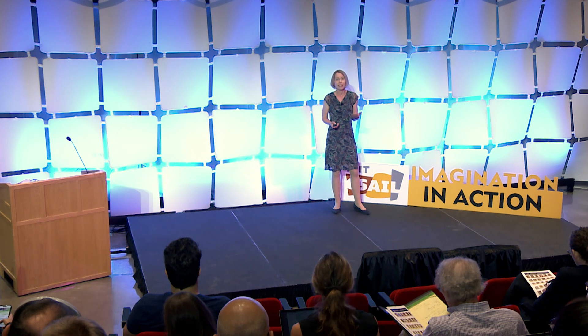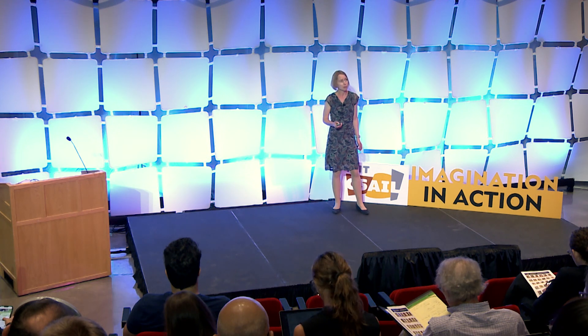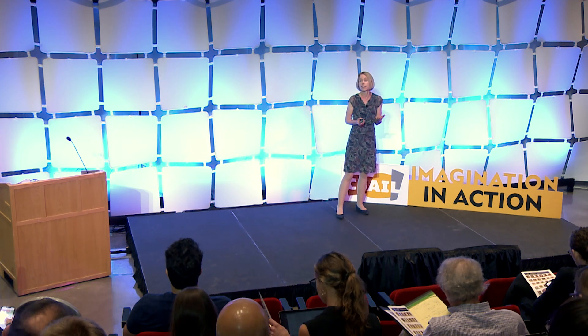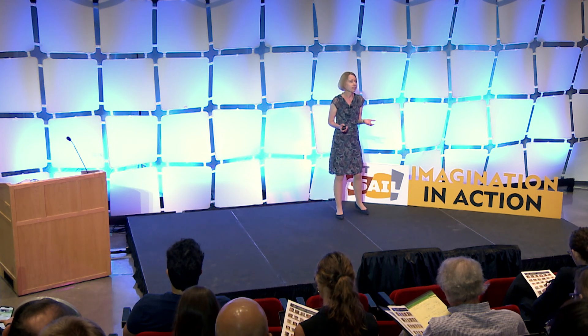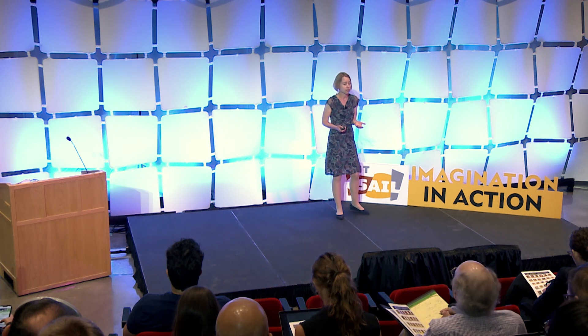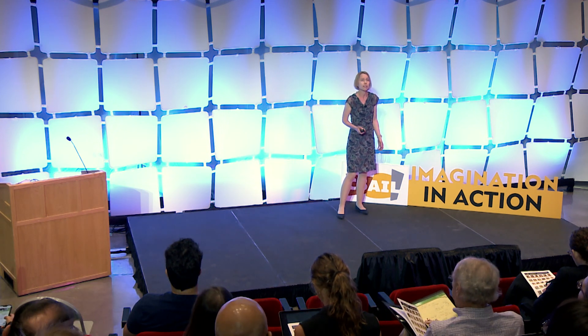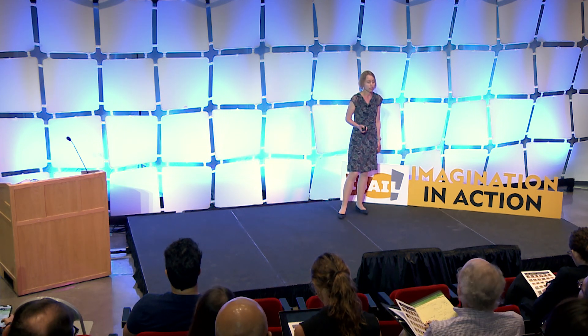Now let's go back to the question: can a graph neural network actually learn what I want it to learn? In some cases yes, but in general there are cases where it's not. There are fundamental limitations in the architecture of these message passing networks and also in the task itself.